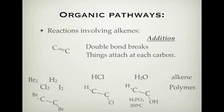The next type is addition reactions, and these involve alkenes. Alkenes have a double bond, and in an addition reaction the double bond will break and things will attach at each end of that double bond. For simple diatomic molecules like Br₂, Cl₂, H₂, or I₂, what happens when you break the double bond is one half goes on one carbon and the other half goes on the other carbon. In the case of adding Br₂ (bromine), one end of the double bond gets one Br and the other gets the other Br. Same with chlorine — one end gets chlorine, the other gets chlorine as well.